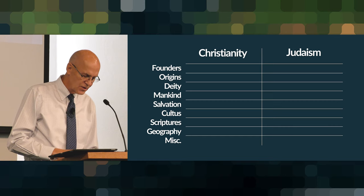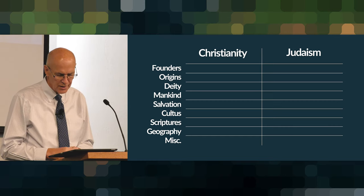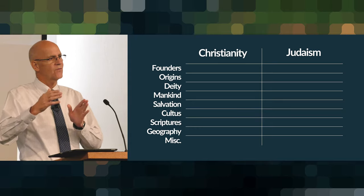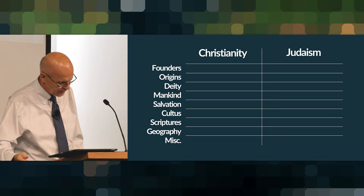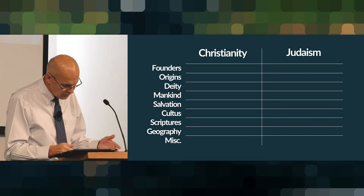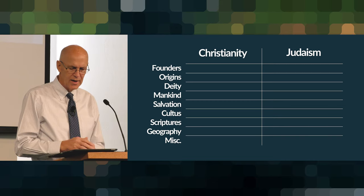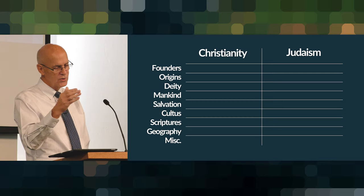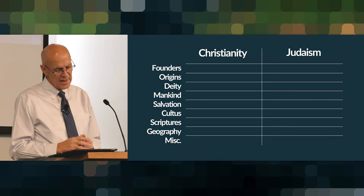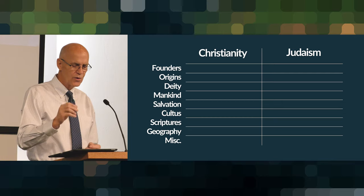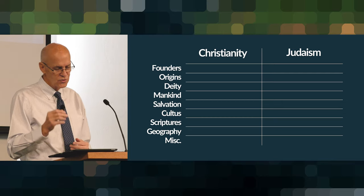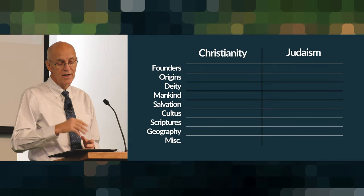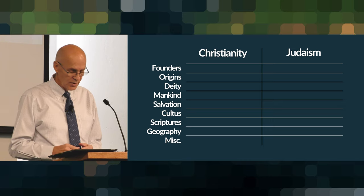So let's put down the basic elements of the Christian religion first, and then we'll use this as a comparison to all the others. We're going to use our information sheets to do this. This is how Christianity would be explained if we were taking a comparative religion course at a college. Here we go — the various categories: founders, origins, deity, mankind, salvation, cultus, scriptures, geography, and miscellaneous facts. Those are the categories we'll fill in for Christianity, and then the same categories for other religions week to week.